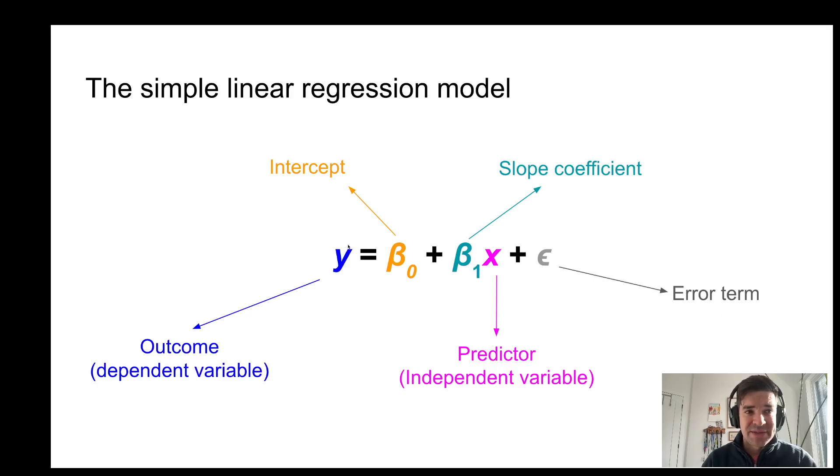So y, this is our outcome or dependent variable. So that is the number of gray hairs. Beta naught is our intercept term. Beta one, this is the slope for our predictor, which in this case is going to be age. And then you also have an error term in linear regression. We won't go into details for that today.